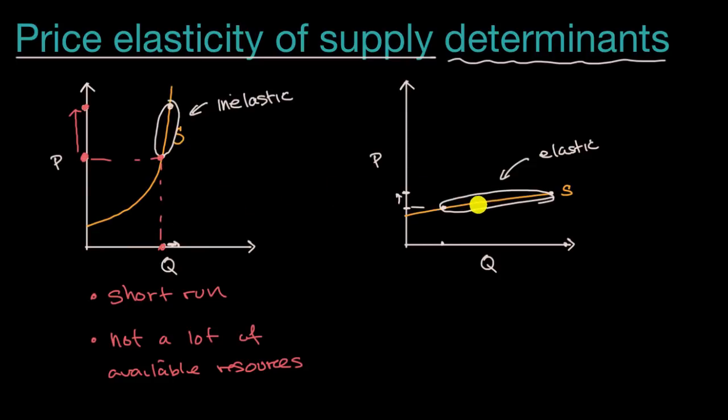Let's then go to the other situation. What would cause elasticity? This could be a world where in the long run, it might be easier to get more resources. In the long run, you can build more factories. You can find, hire, and train more people. So the longer run we are talking about tends to lead to a more elastic supply curve.